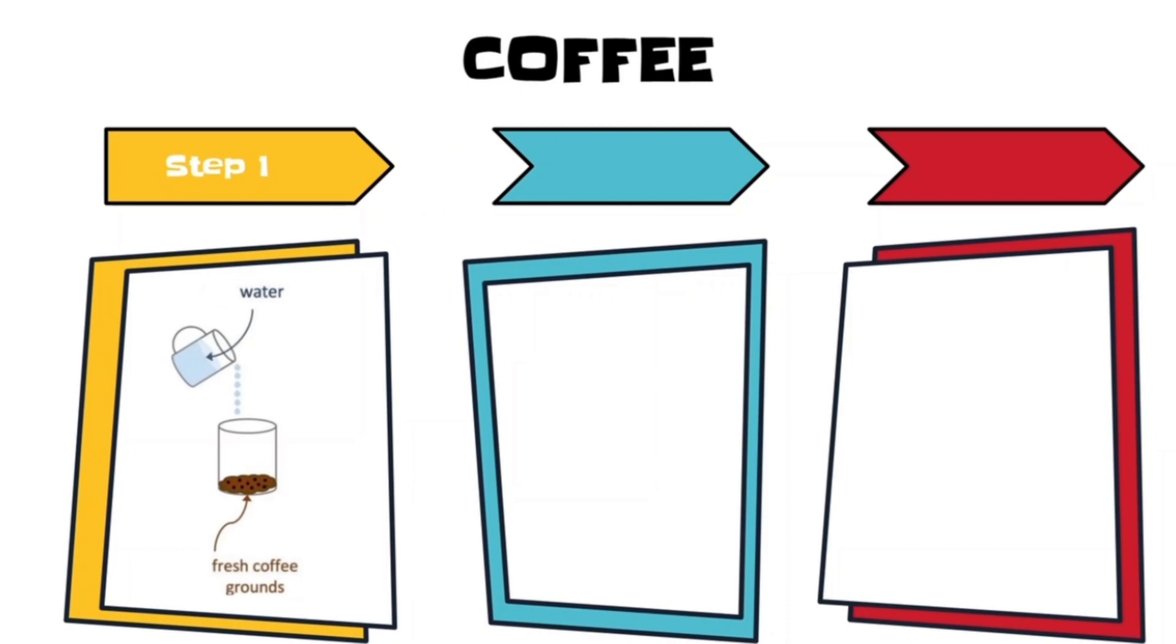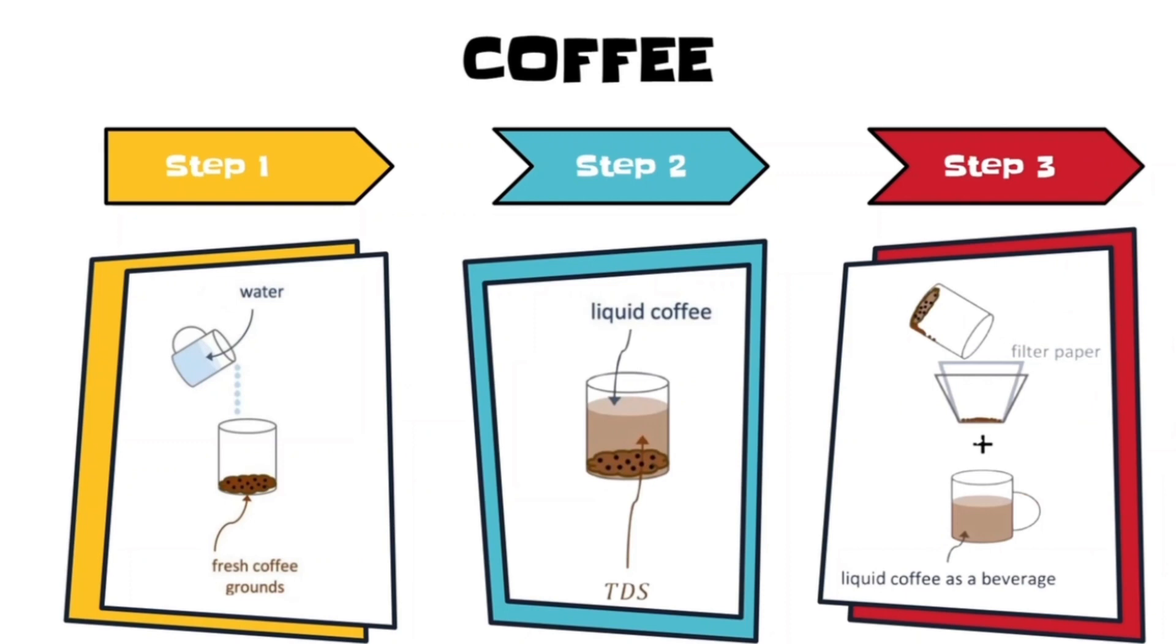When we pour hot water into a cup containing coffee powder, the water will act as solvent to separate the coffee flavors from the coffee powder. This results in drinkable coffee, which is the solvent with dissolved flavor, with the completely depleted coffee grounds remaining in the filter.